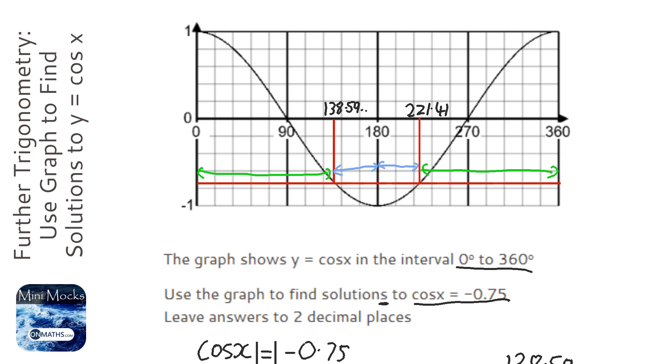And you might have to draw that graph or just do a quick sketch of that graph, because it might not be given to you in the question, so make sure you know what the sine, cos, and tan waves look like between 0 and 360.